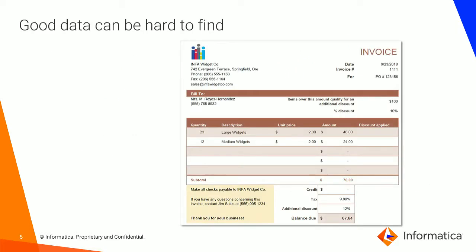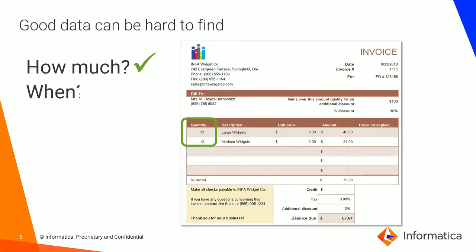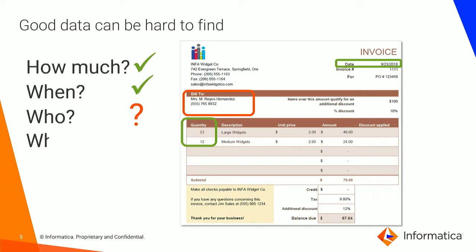But the problem is that good data can be hard to find. The challenge isn't with your transactional data — organizations are usually good at logging transaction data, knowing how much a transaction was for and when it took place. The problem is usually with reliably identifying who you transacted with and for what. In other words, the problem is in your master data.